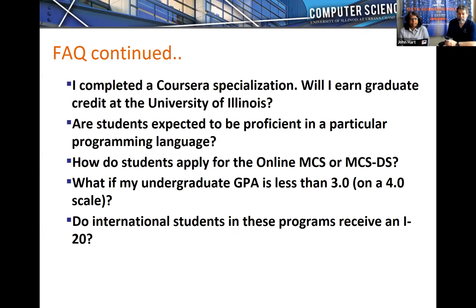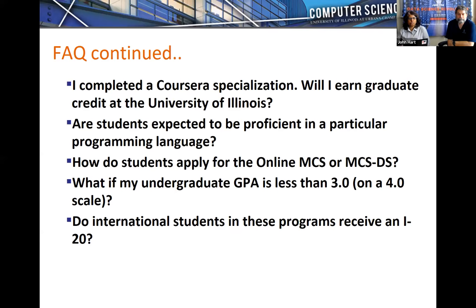Do international students in this program receive an I-20? Because this is a 100% online program with no campus requirement, the university does not issue I-20s for any online programs — students are not expected to be on campus. Therefore, this program does not provide a pathway for CPT or OPT. However, once you have this degree — credentialed the same way as any other Master of Computer Science — you can use it to seek an employer-based visa.